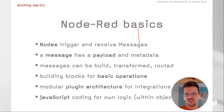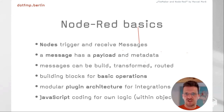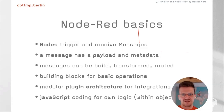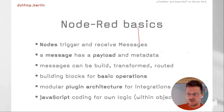Nodes trigger and receive messages. You put in an element and it sends a message with a payload and some metadata. Messages can be built, transformed, and routed. There are building blocks for basic operations and a modular plugin architecture for integration — hardware integration, system integrations, API integrations, and all sorts of things. And because it's built on Node.js, it's JavaScript, so if you're comfortable with JavaScript you can do your own logic code within the objects.